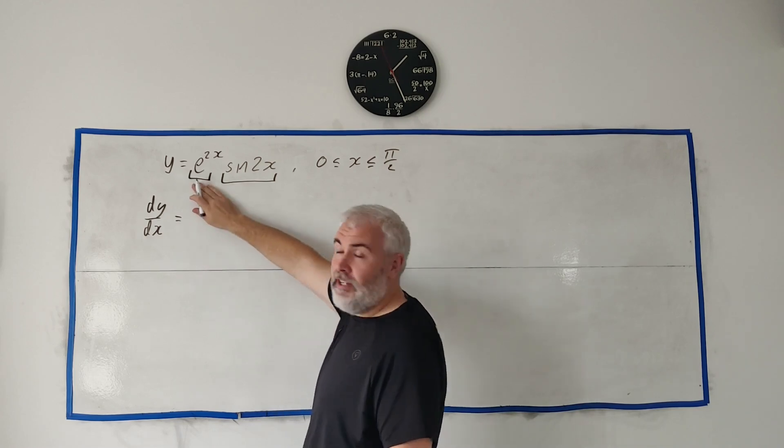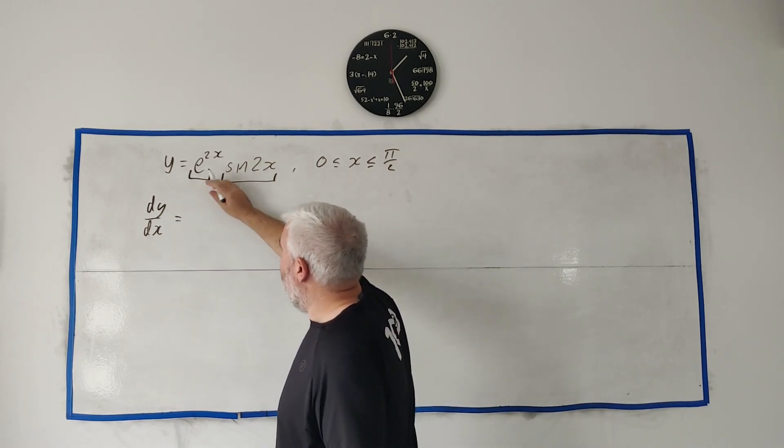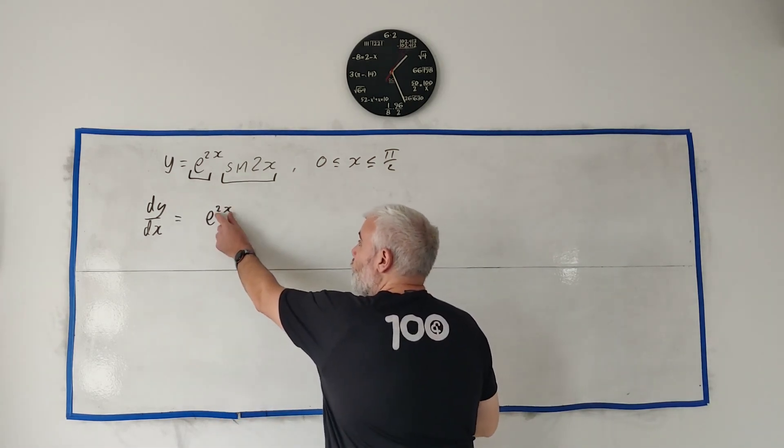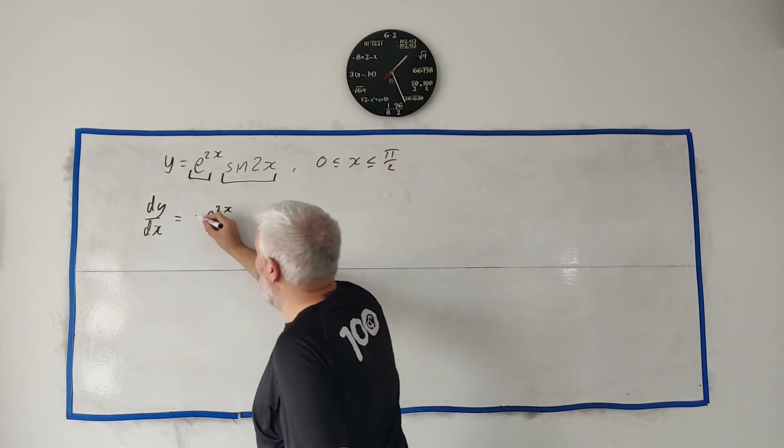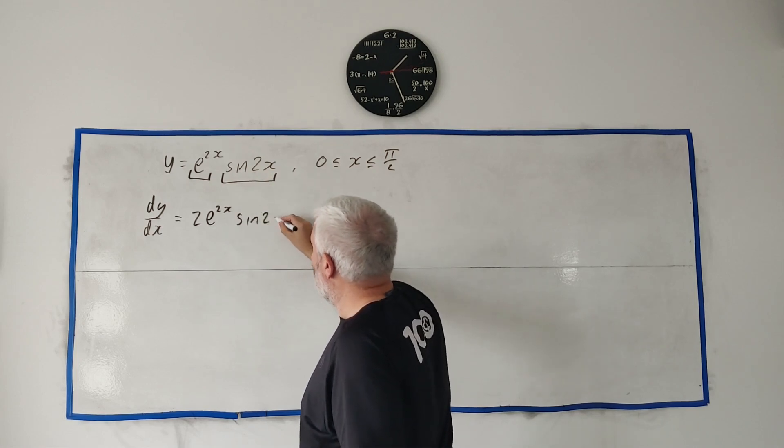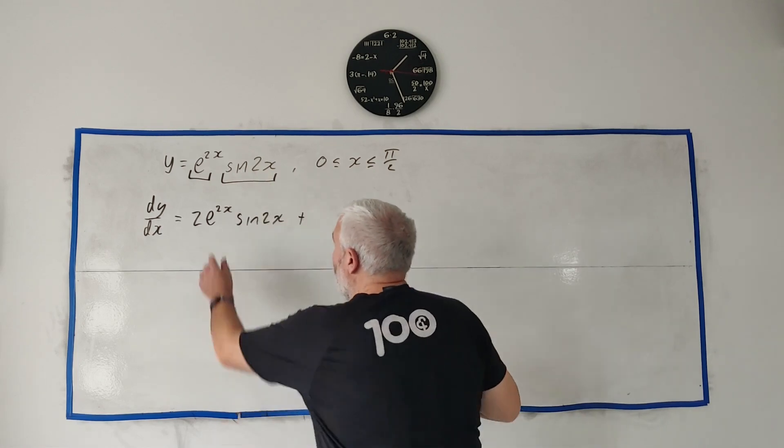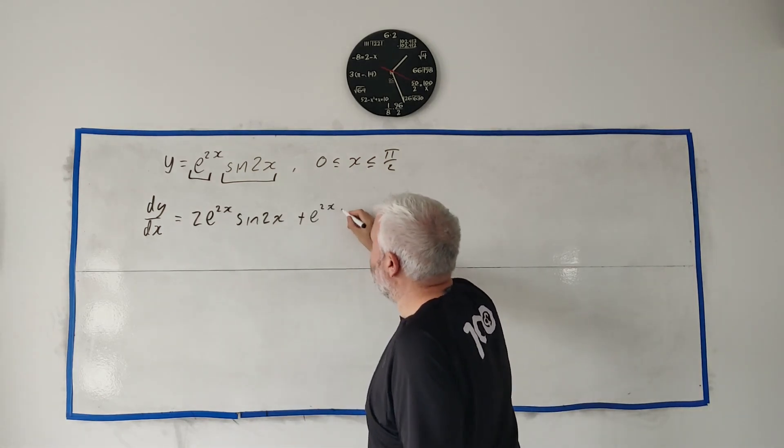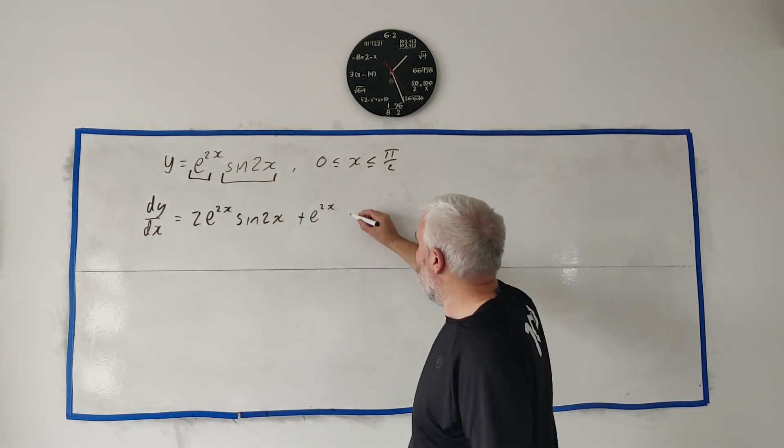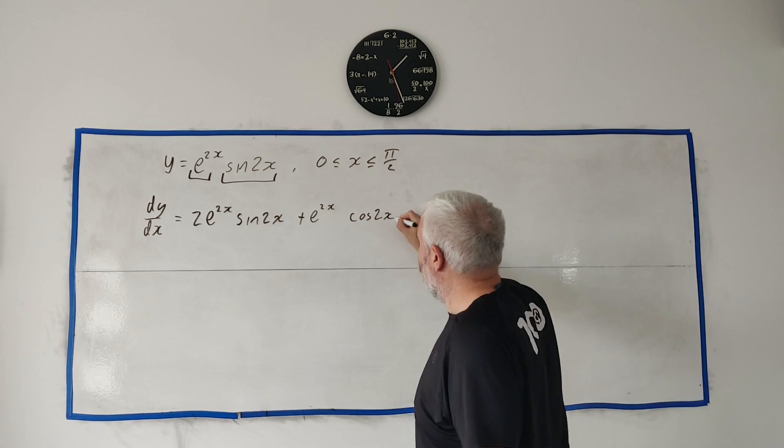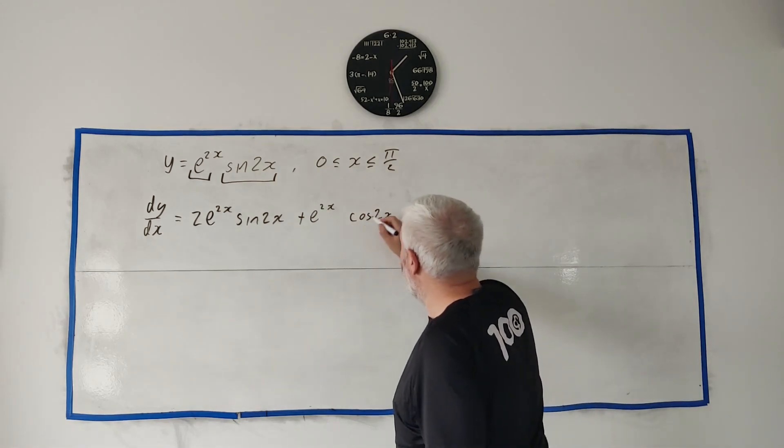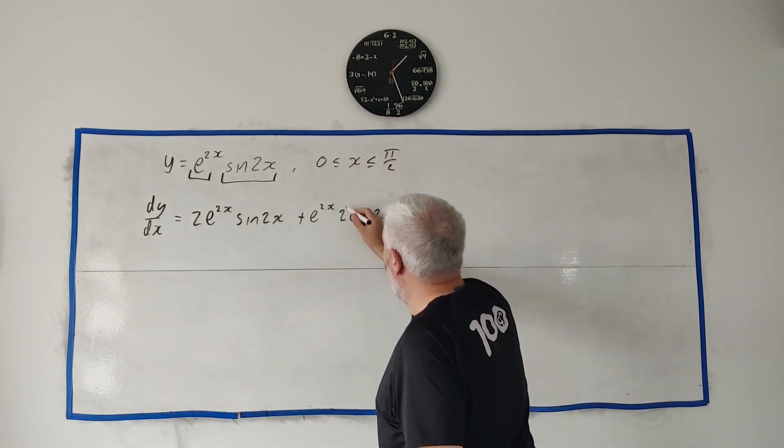The product rule tells us to differentiate the first term, e to the power of 2x. The derivative of that is e^(2x) multiplied by the derivative of this power, so that's multiplied by 2. Then we leave the second term alone, sin(2x), then we add on, we leave this guy alone e^(2x) and we multiply by the derivative of sine. The derivative of sine is cosine 2x, or cosine whatever's here multiplied by the derivative of what's here. In this case it is 2.